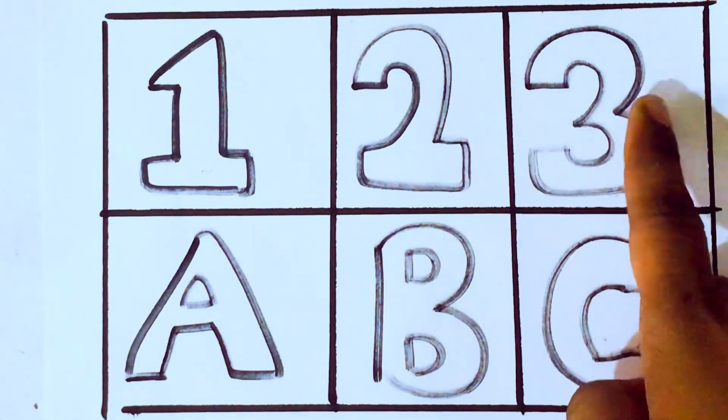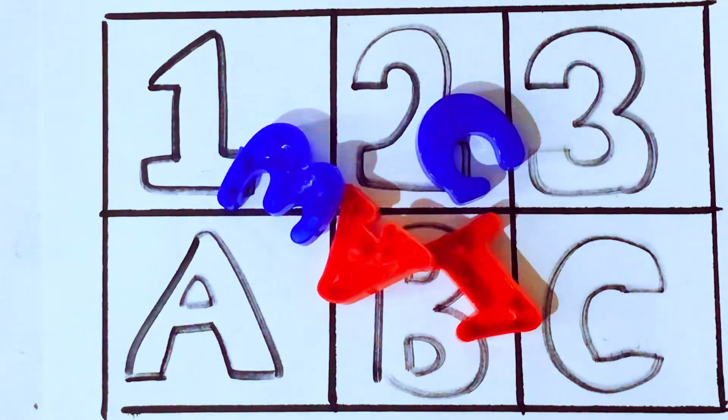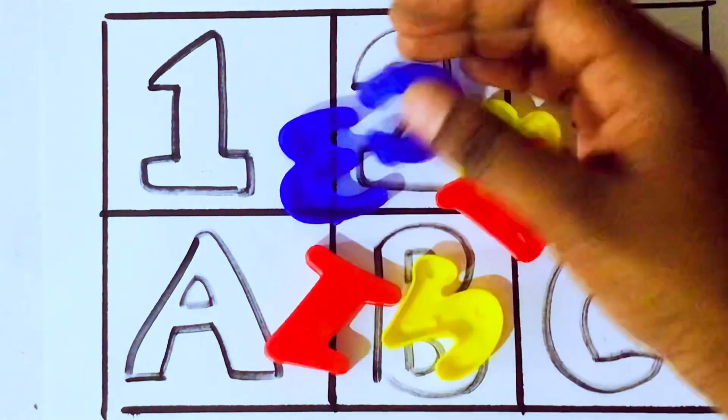1, 2, 3, A, B, C. Okay, let's learn with the toys. These are all the toys. 1, 2, 3, A, B, C toys.